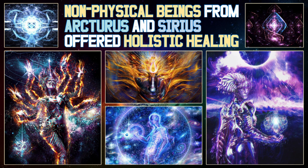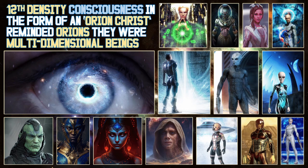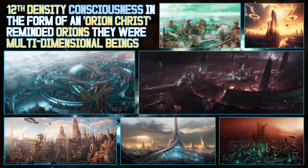Non-physical beings from Arcturus and Sirius offered holistic healing energies. Arcturians were, and still are, recognised as specialists in emotional healing. Arcturus is 37 light-years from Earth. Sirians were, and still are, recognised as specialists in physical healing. The Founders decided to assist in Orion. Twelfth-density consciousness, in the form of an Orion Christ, reminded Orions they were multi-dimensional beings. Victims gradually became empowered in their personal sovereignty, and the empire slowly lost its power.